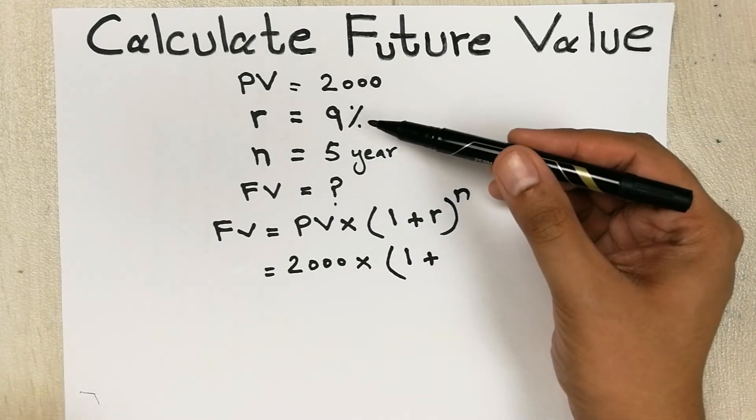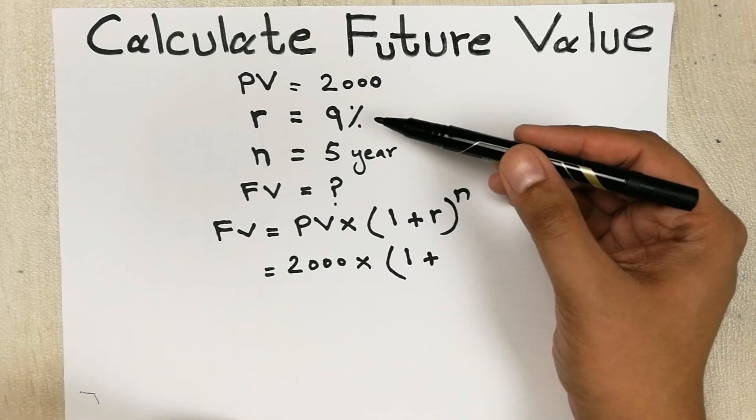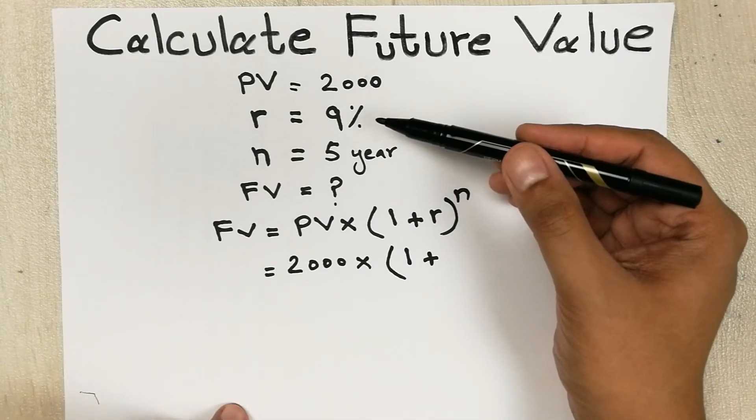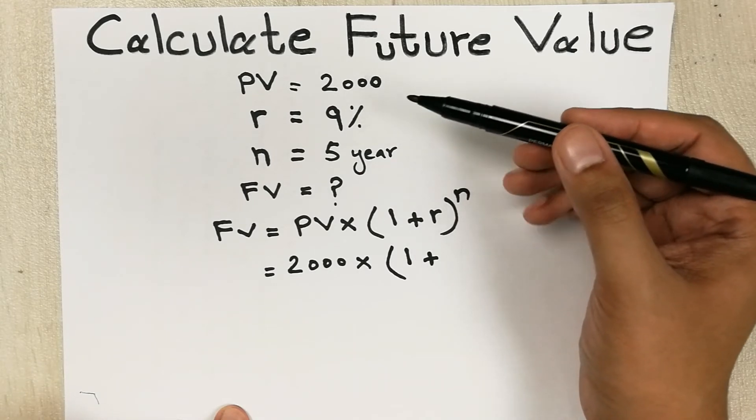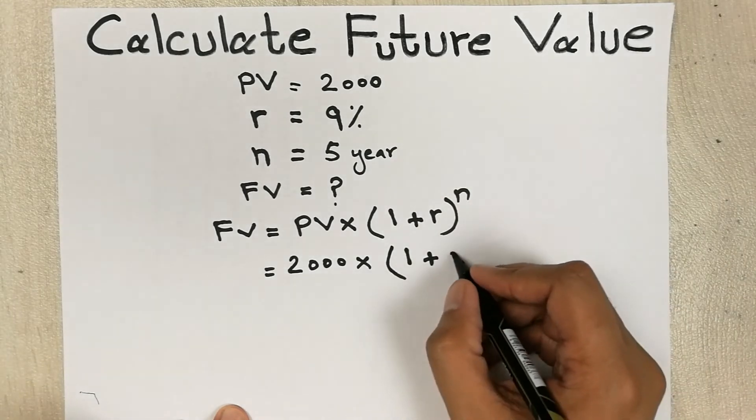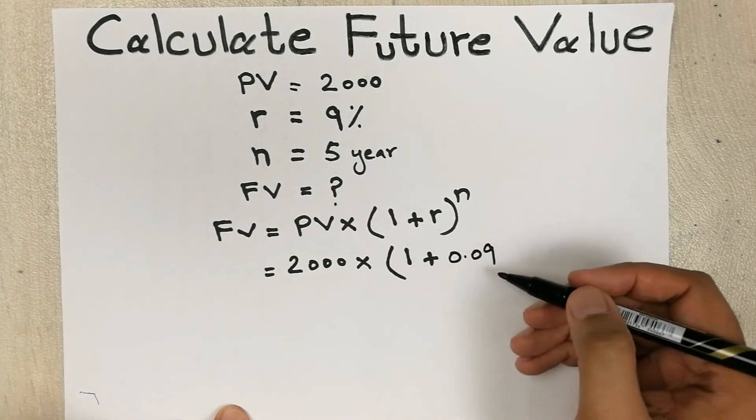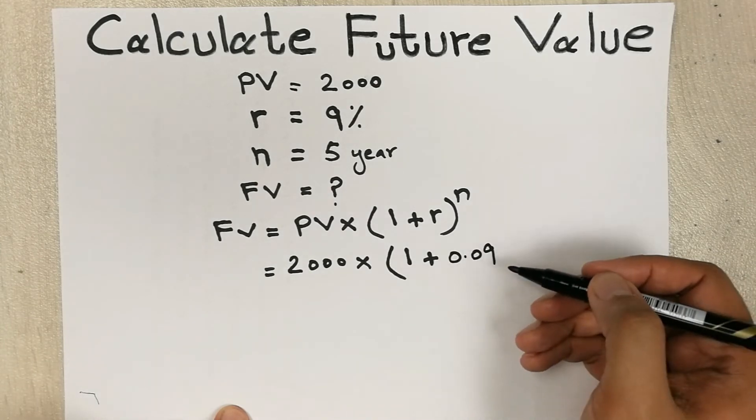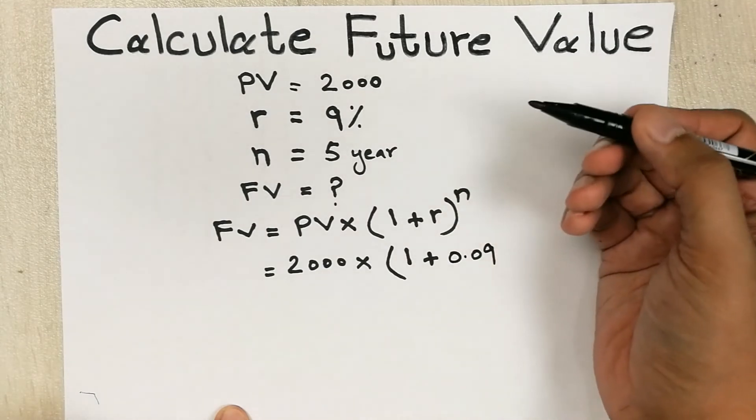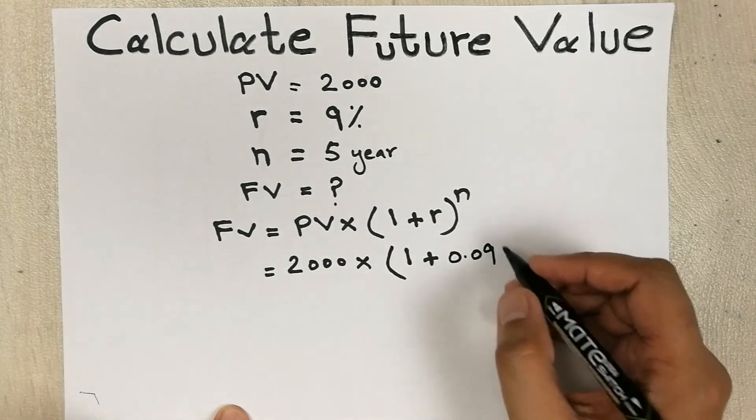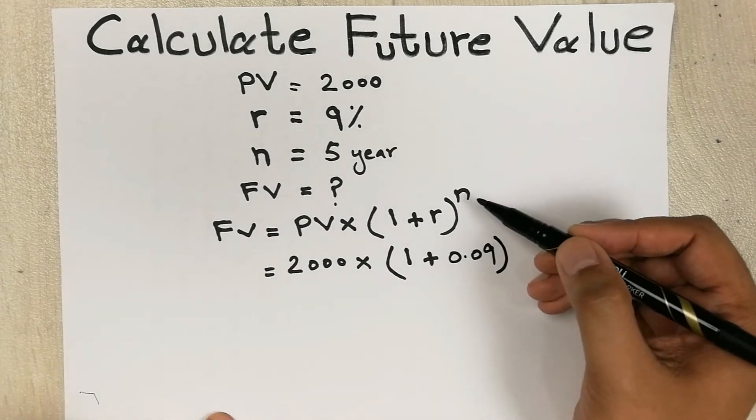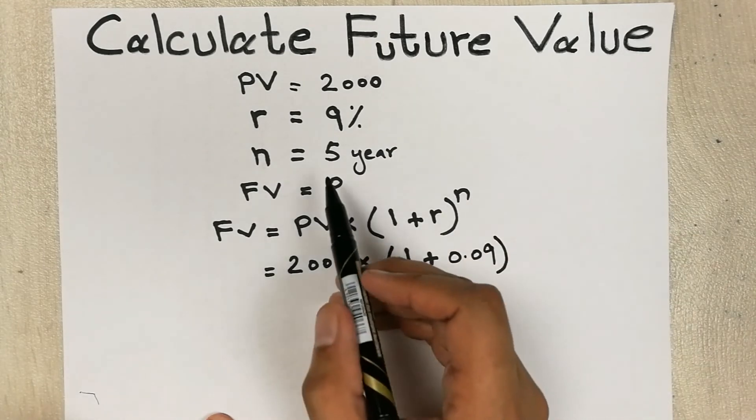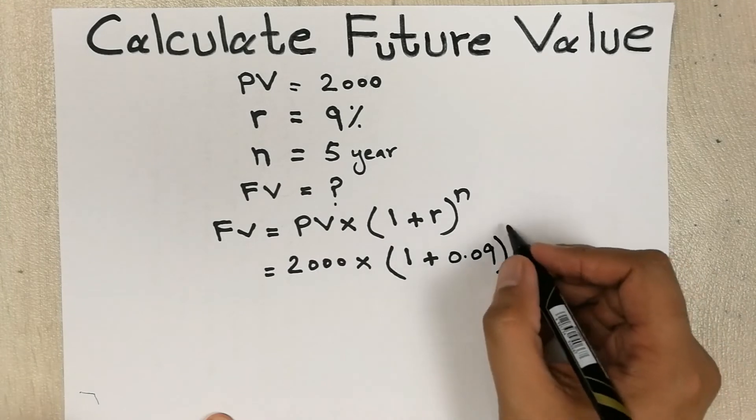Inside we have one plus r. R is our interest rate, which is nine percent. We do not write it as nine percent; we will convert this into decimal. We divide nine by hundred, so our answer will be 0.09. Then we close the bracket, and n is five years, so we put here five.